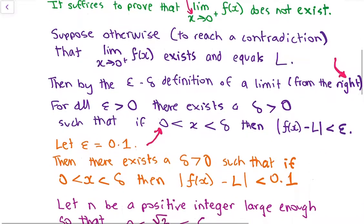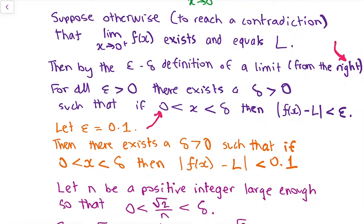Now we're going to set a fixed value of epsilon which will be 0.1, and we will show that there does not exist a delta that satisfies this condition. So by our assumption there should exist a delta > 0 such that if x is greater than 0 and less than delta, then |f(x) − L| < 0.1.